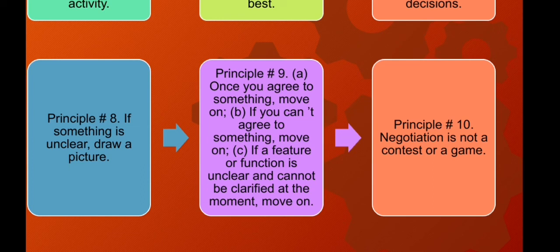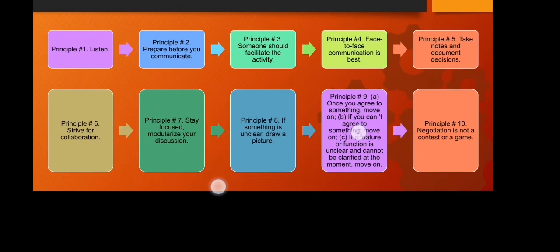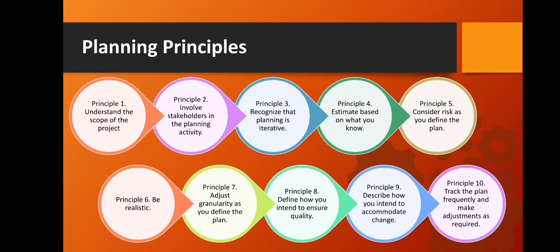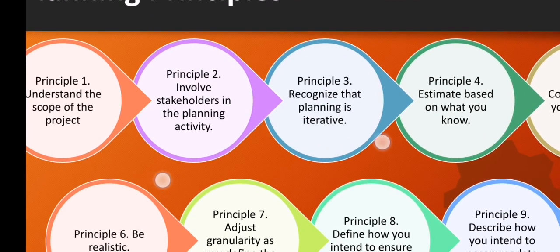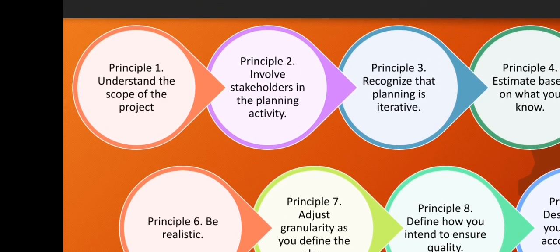Those are the ten communication principles. Next is the planning principles — there are ten. Principle one: understand the scope of the project. It is sometimes impossible to use a roadmap if you don't know where you're going, so the scope provides the software team with a destination — you should have a goal. Principle two: involve the customer in the planning activity. The customer defines priorities and establishes project constraints, which is why they should be involved during planning.